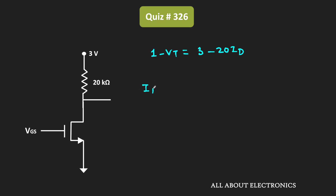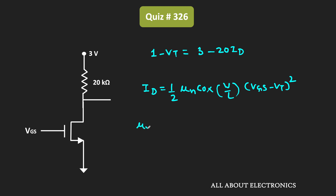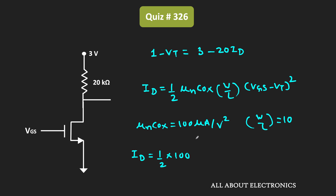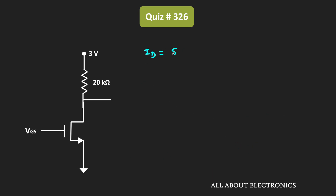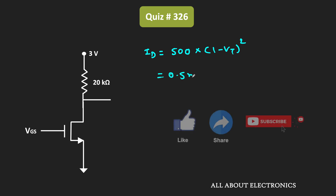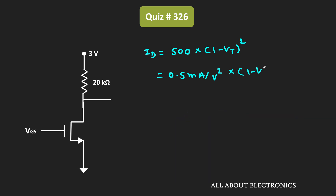Now let us find the value of Id. In the saturation, the drain current Id can be given as (1/2) times μn·Cox times W/L times (Vgs - Vt)². We have been given that μn·Cox is equal to 100 μA/V² and the W/L ratio is equal to 10. So the drain current Id equals 0.5 mA/V² times (1 - Vt)².